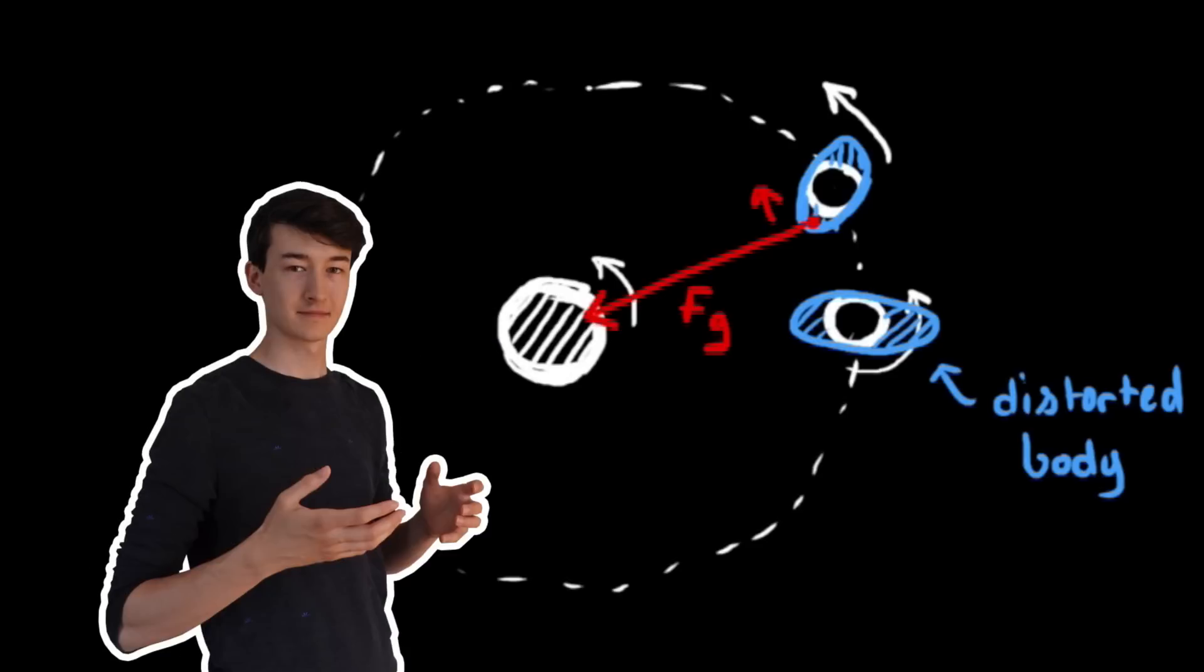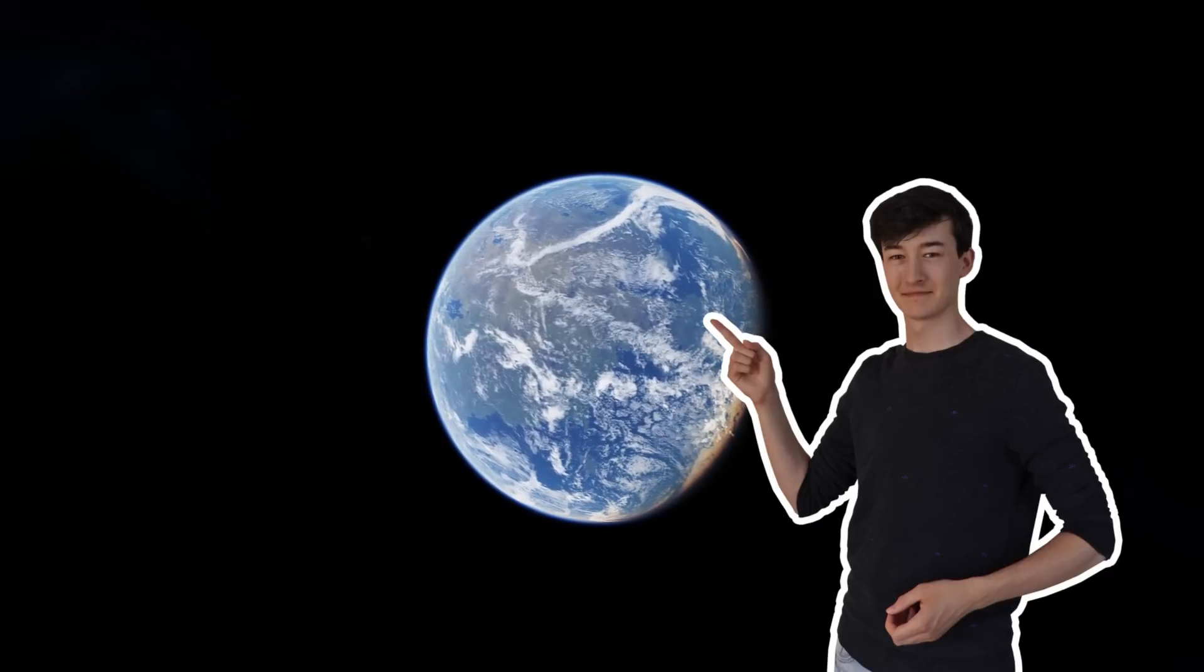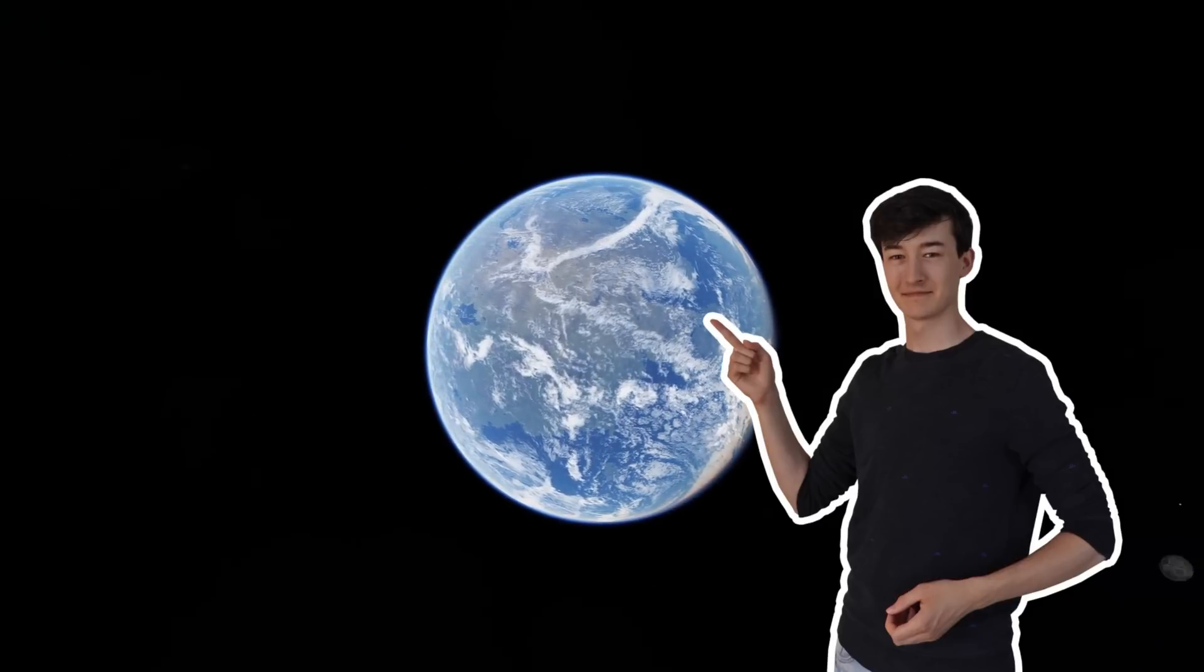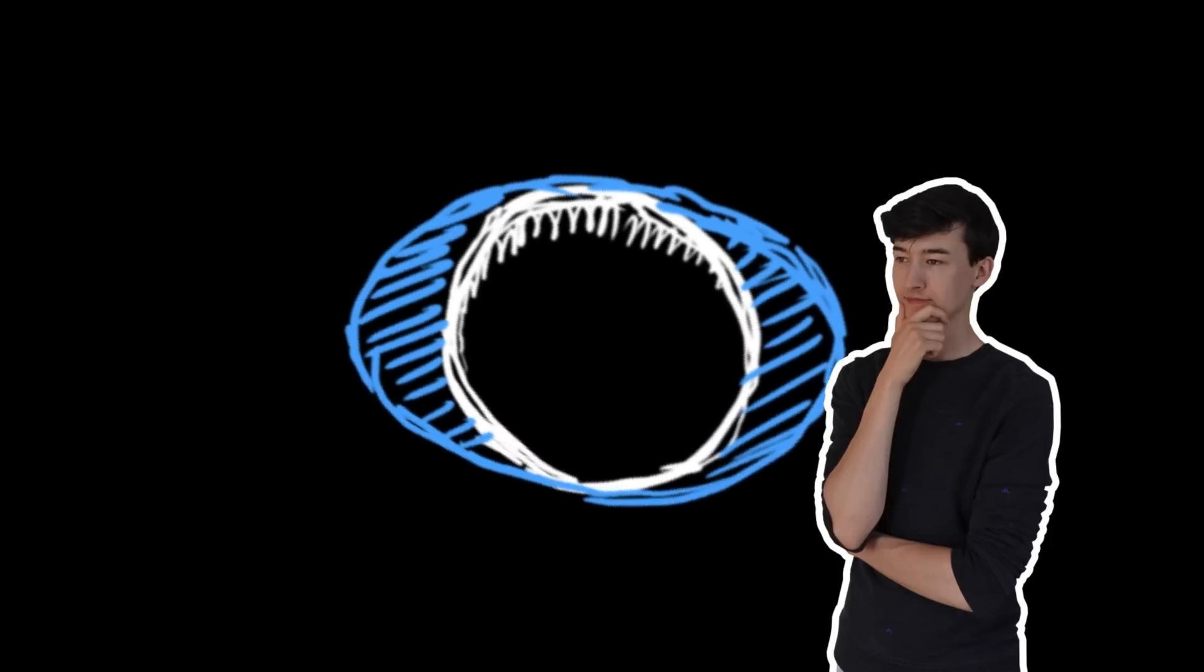This keeps going until it slows down so much that it matches its orbital period. If the initial rotational period is much lower than the orbital period, it actually speeds up until it matches. So technically, any two-body system will reach a tidally locked state, assuming the bodies can be distorted to some degree. But this takes time.